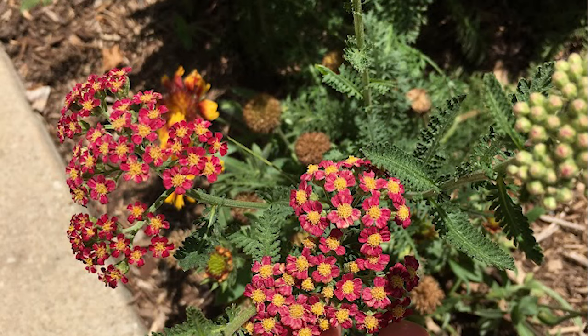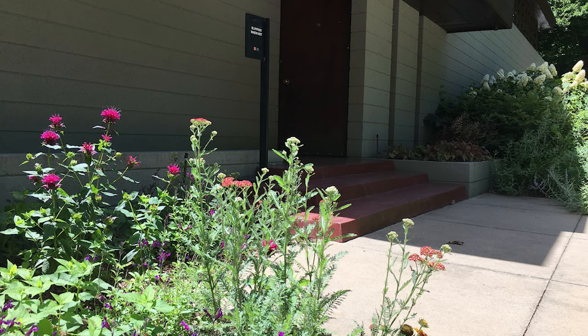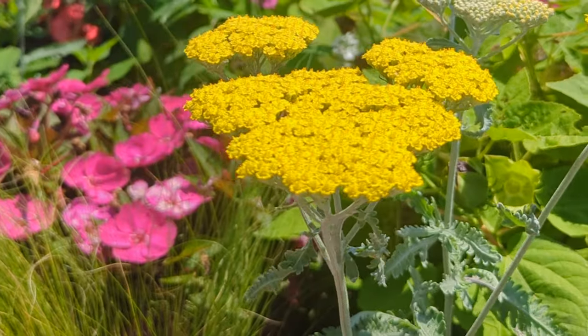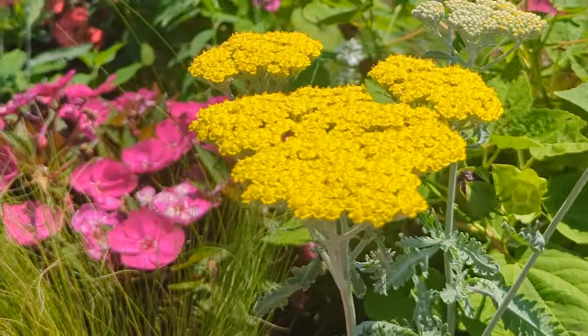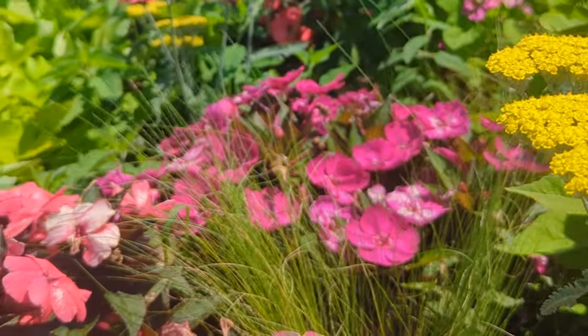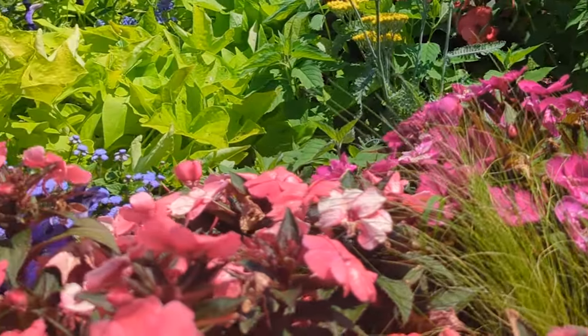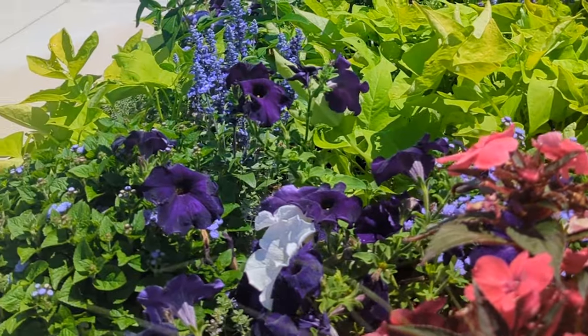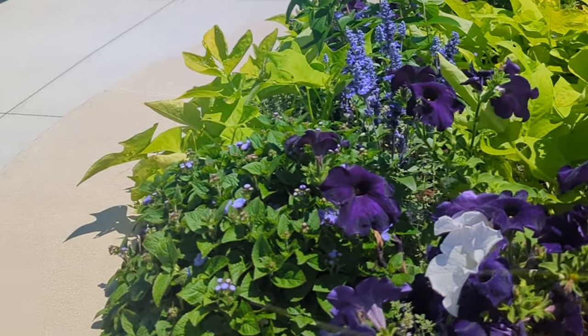Moving on to perennials. First up is yarrow, probably one of my favorite flowers with its interesting flower structure. You can get these in almost any color at nurseries, though the wild ones are usually white or yellow. They grow from zones three to nine and are kind of semi-evergreen — their leaves stay through winter. They usually get about two to three feet tall and bloom in the early summer, but if you deadhead them they can produce blooms throughout the year.